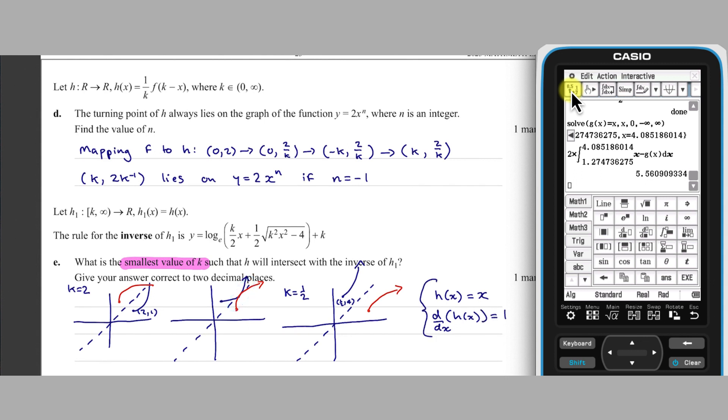To do this in part E, we are given H inverse. Fortunately, our thinking about H1, about it having to meet Y equals X with gradient 1, also applies to its inverse. I'm going to start this computation by defining H inverse.